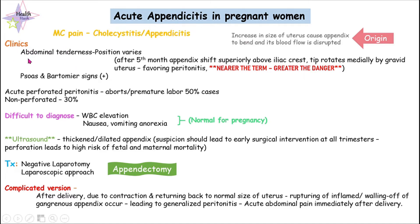If we look at the clinical signs in these patients, we can see abdominal tenderness, and this abdominal tenderness varies depending on the appendix position. Depending on the gestational period, the appendix location differs. Usually after the fifth month of the gestational period, the appendix will be shifted superiorly above the iliac crest.